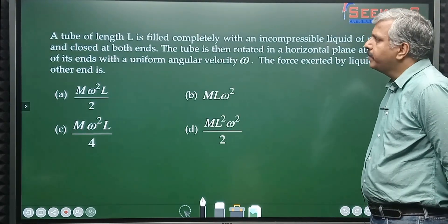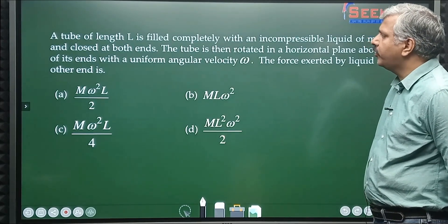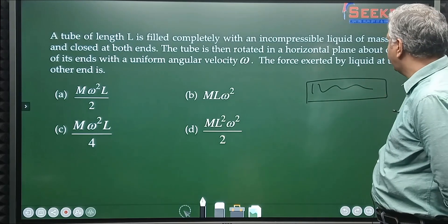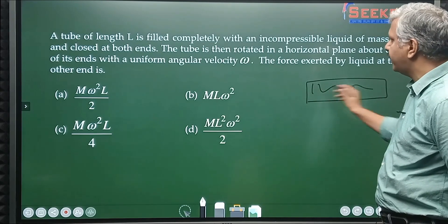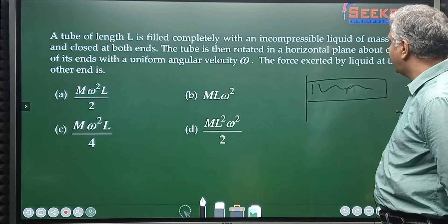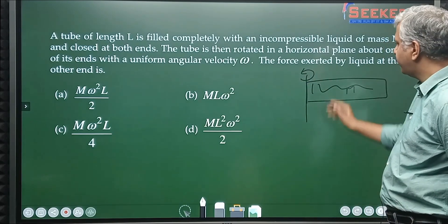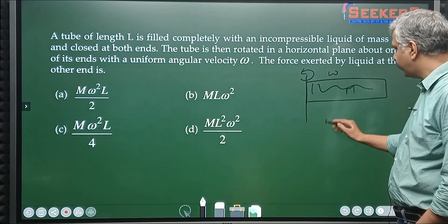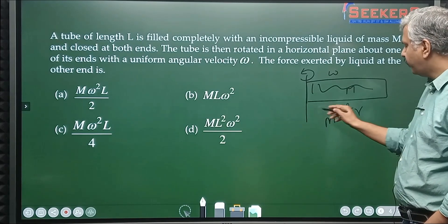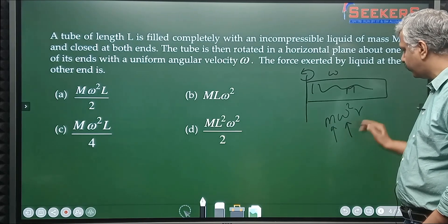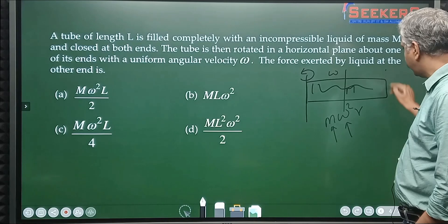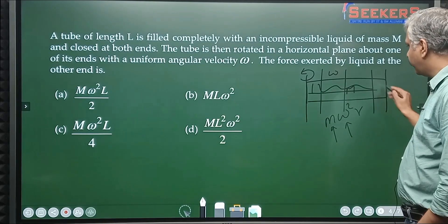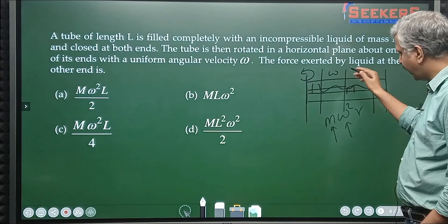Here there is another question, this is slightly different and a little difficult. A tube of length L is filled completely with water or some liquid having mass m and closed at both ends. The tube is then rotated about one of its ends with angular velocity ω. So you know centripetal force is m ω² r. But here what is the problem? m is mass is okay, ω is also okay, but what is r? Is it this length, this length, or this length?